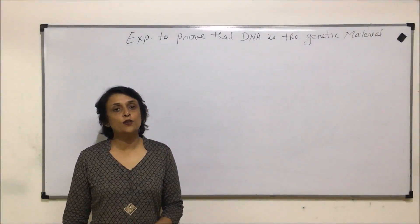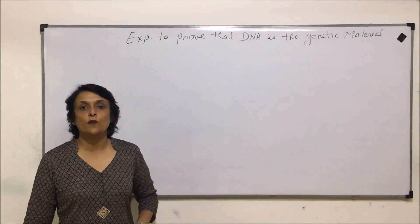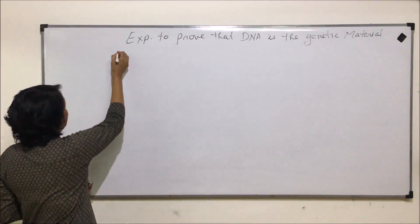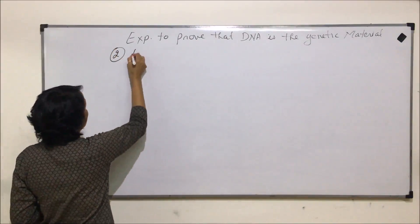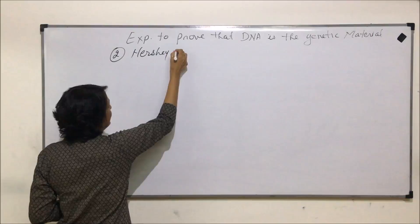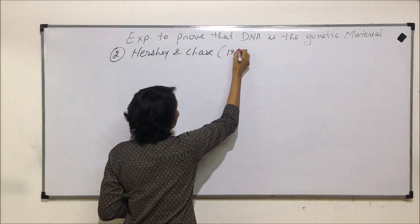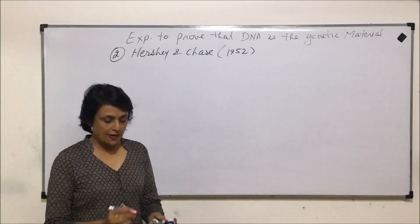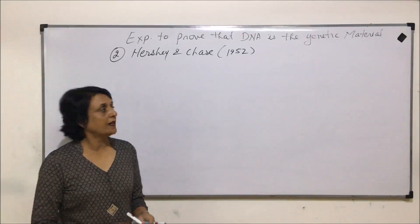In this video we will talk about the second experiment which was performed to prove that DNA is the genetic material. This experiment was performed by Hershey and Chase in 1952, and this experiment actually confirmed that DNA is the genetic material.